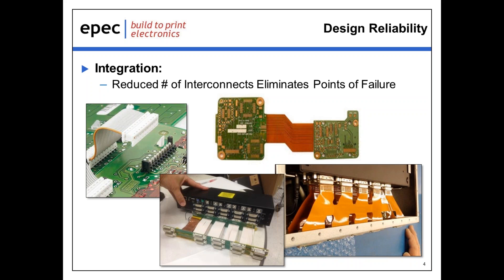Those points would consist of rigid board to connector solder joints, connector to connector male-female contacts, connector to cable contacts, and then back down to the adjacent rigid board. In the image on our screen right now, you can see a couple of examples that highlight this point, where on the left-hand side we have cable-based solutions, and on the right side we have flex-based solutions, which graphically demonstrate this point.